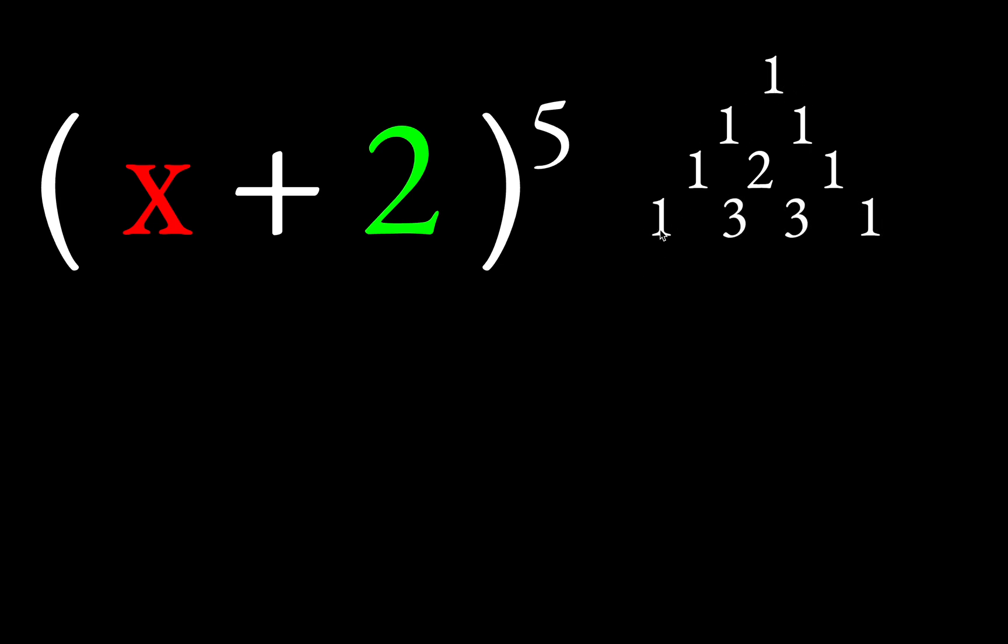There's the upside-down V here, the 1s kind of flying like geese upward. And here we get 1, 3, 3, 1. Where did the 3 come from? Well, it's because 1 plus 2 makes 3, and 2 plus 1 makes 3.